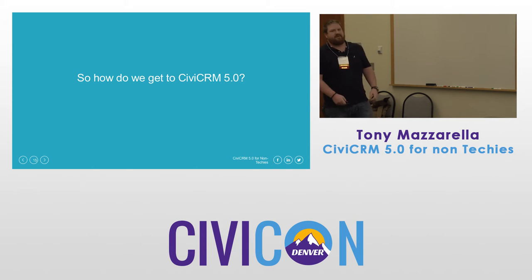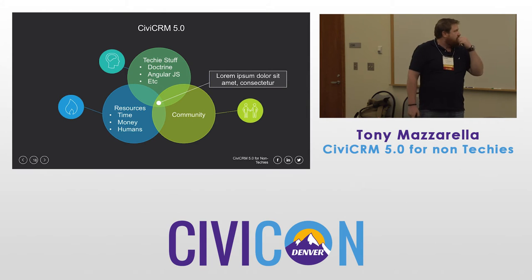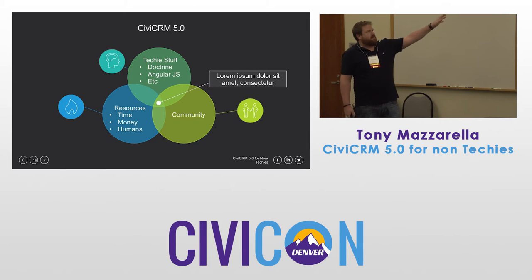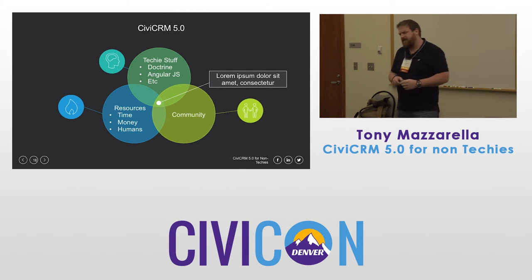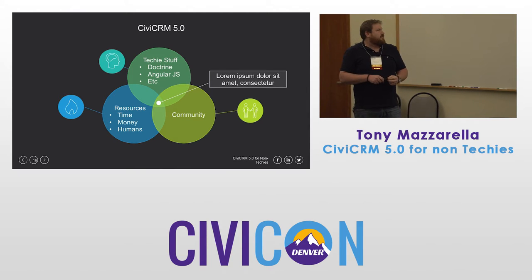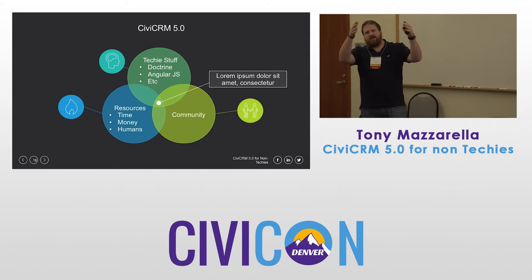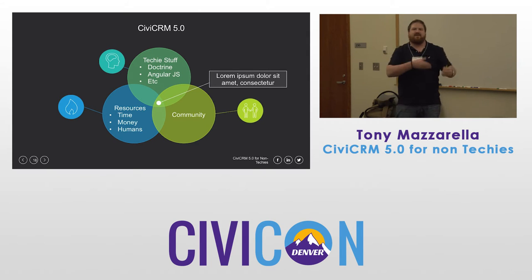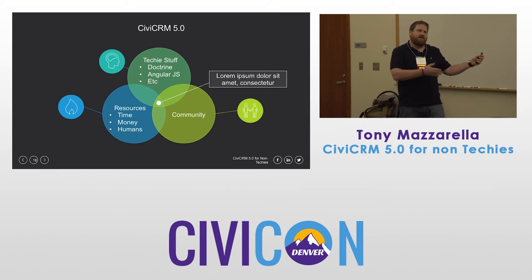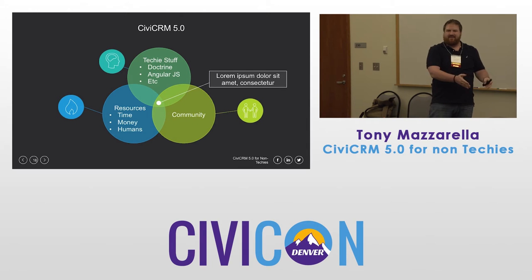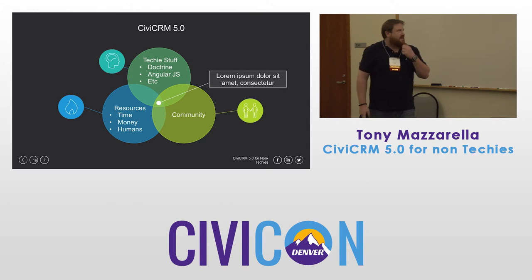How do we get to CiviCRM 5.0? It's not really easy. We're looking at Doctrine, and we've been using Angular to make things work and feel better when using CiviCRM. We would have to take our existing code base and rewrite a lot of code — hundreds of thousands of lines. You can do that automatically, manually, or blow it up and start over. But that requires a lot of planning, roadmap, and resources because we still have to keep CiviCRM working and running well for everybody. That requires time, money, and people.